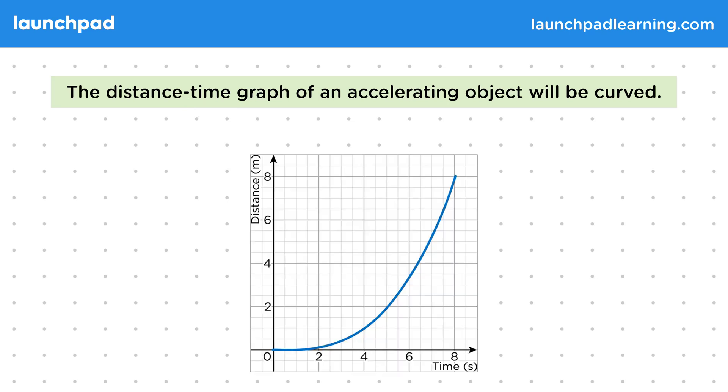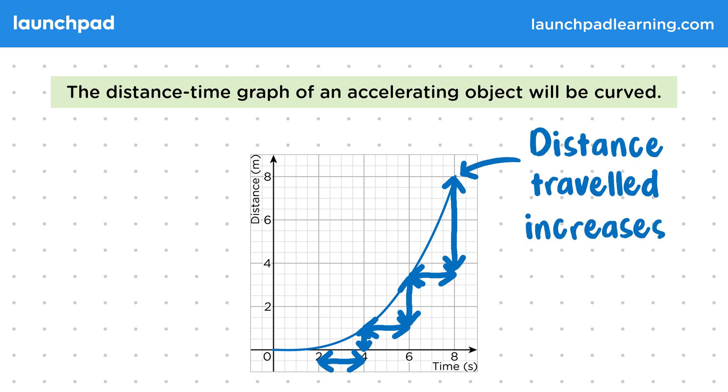Here we can see that this graph is curving upwards. But how exactly does this affect the gradient? Well, if we look at these even time periods of 2 seconds, we can see that the distance travelled in this time is increasing. So if the object is travelling greater distances in the same time, then its speed must be increasing.